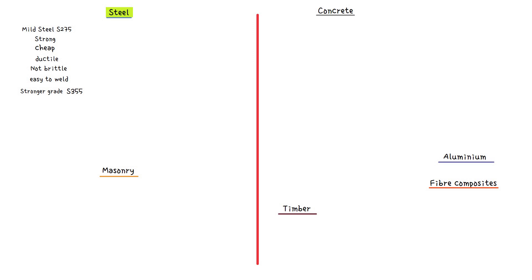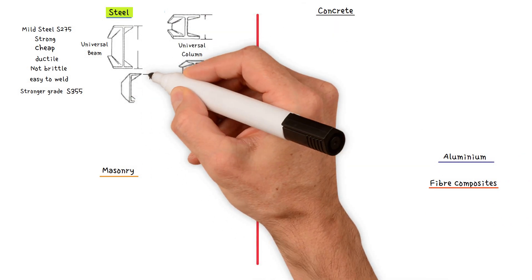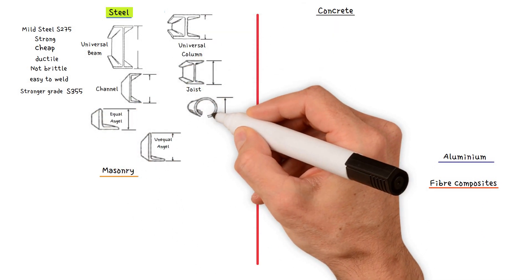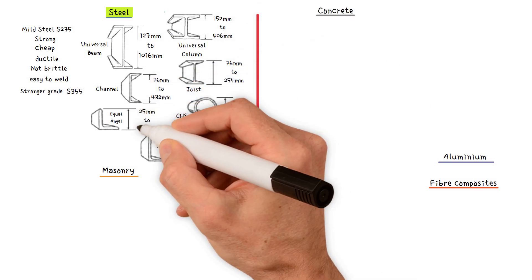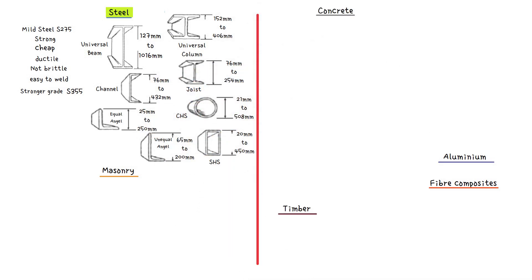Standard structural sections are used in the majority of steel structures. Every major industrial country makes a range of standard cross-sectional shapes that are widely available for general use. Red hot steel billets are passed through a series of rollers, gradually transforming the shape to the desired profile. These are then cut to transportable lengths for distribution across the country. The different weights are achieved by moving the rollers further apart during the manufacturing process, resulting in thicker sections.